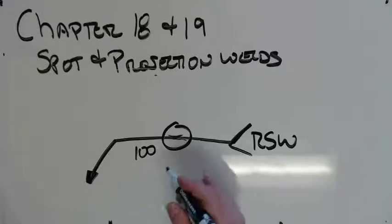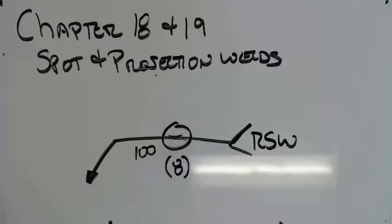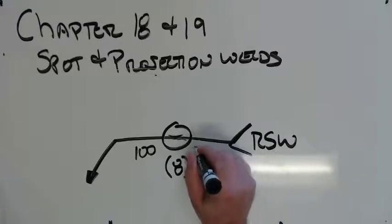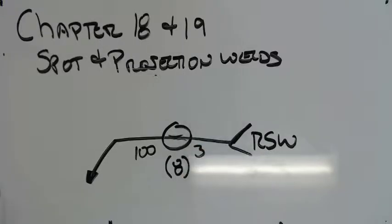We can say how many we want, and we'll put that in parentheses just like a lot of the other stuff. So that means we're going to have eight spot welds in this stuff. And then I can also tell you pitch and spacing. So if I wanted them every three inches, that would be three inches on center.